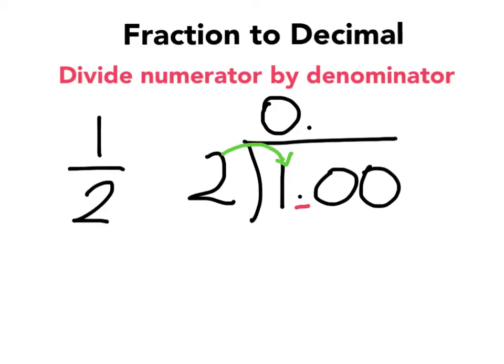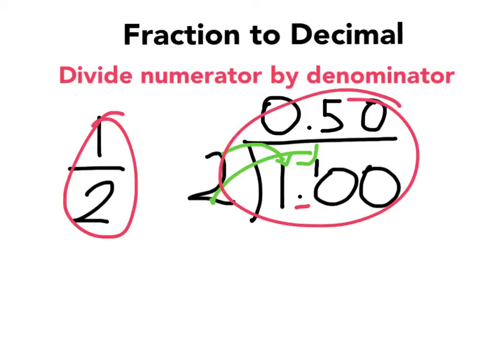Right, so now I need to carry my 1. So it becomes 2 into 10. 2 goes into 10 5 times. 2 into 0, 0. Okay, 50%. Now, you should know that because it's a half. You know a half is 0.5. Let's have one more quick example.